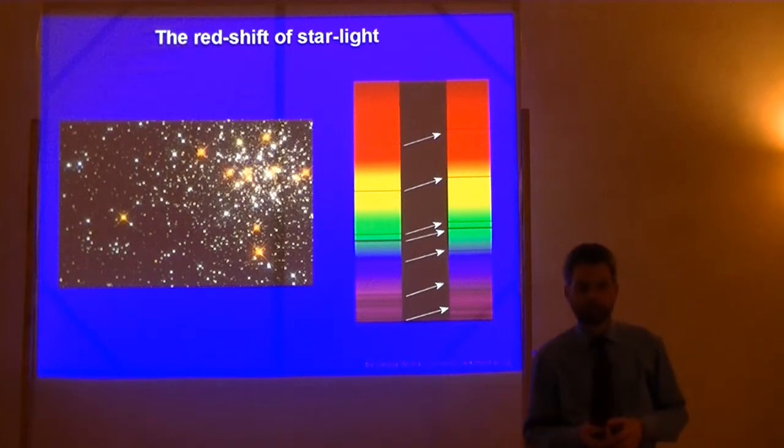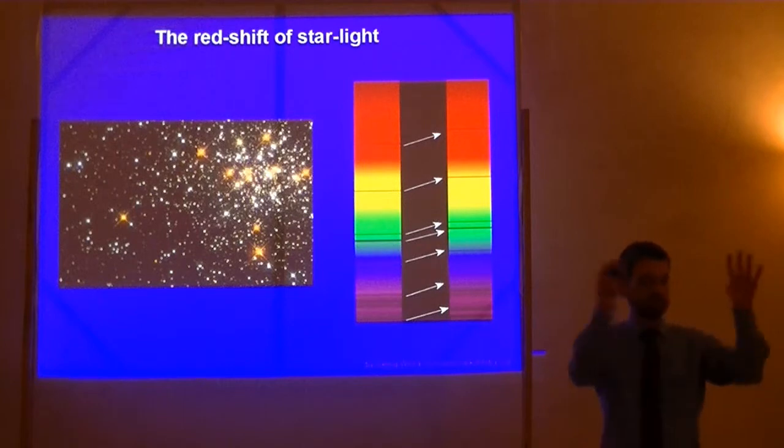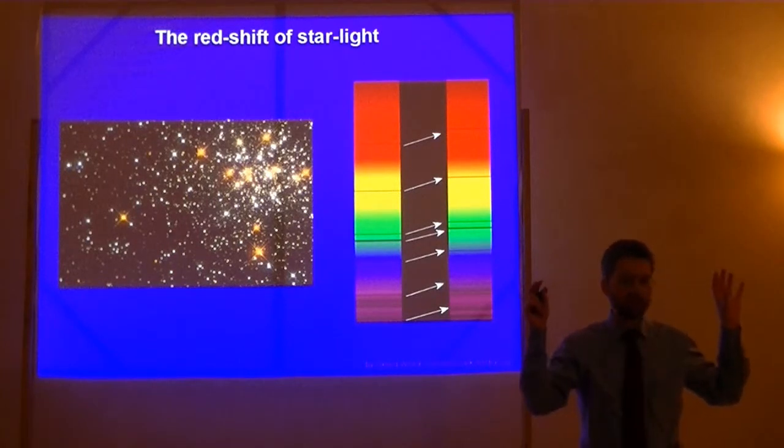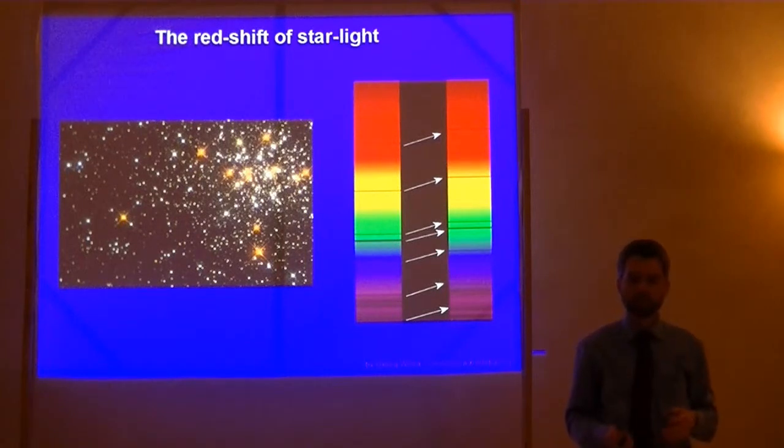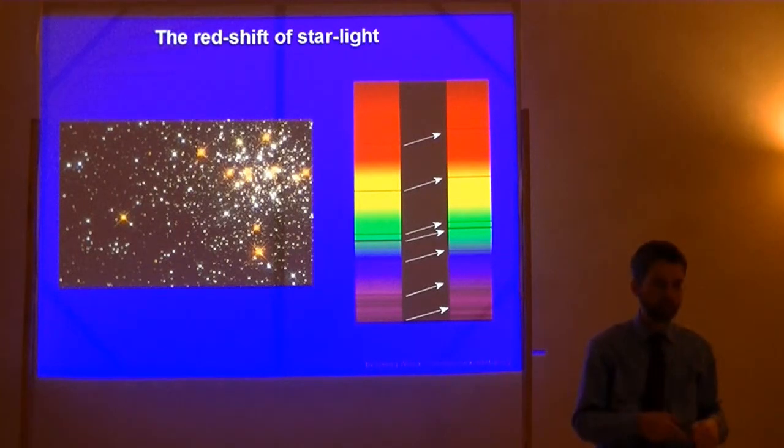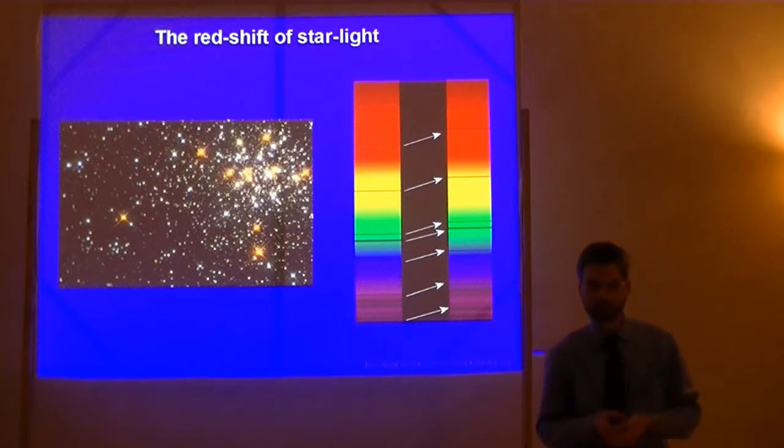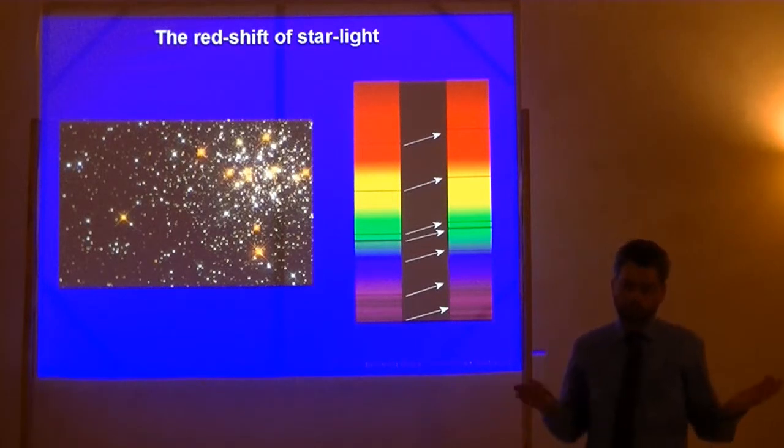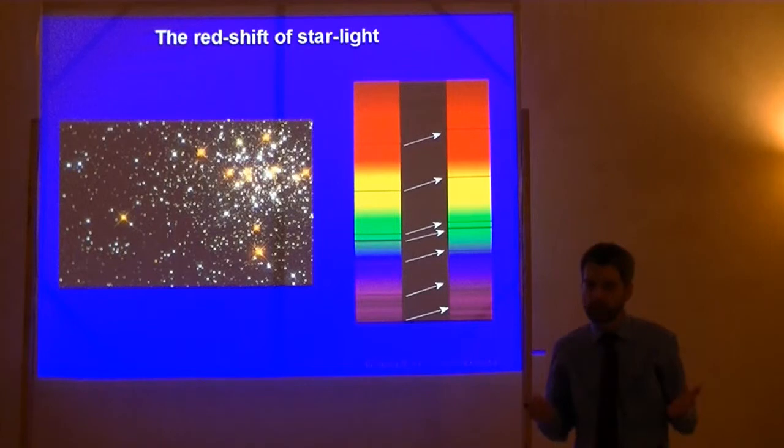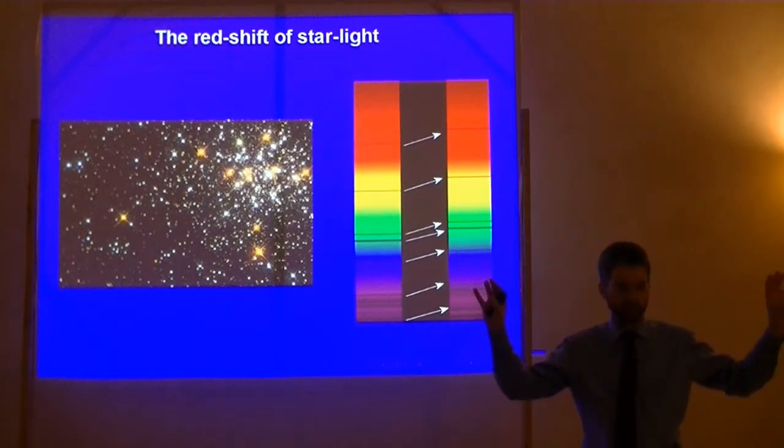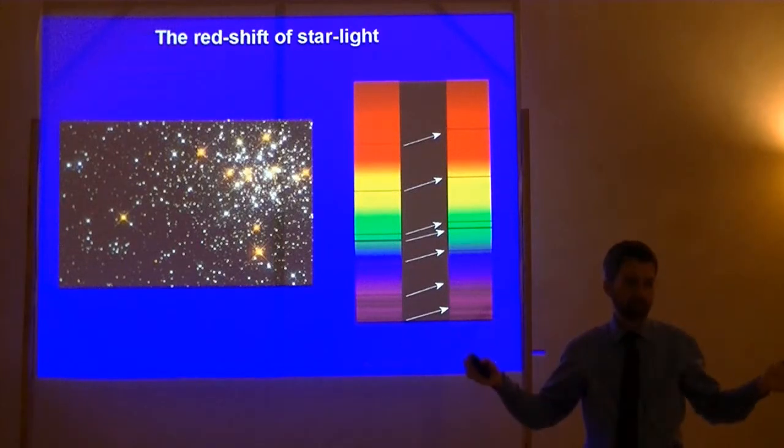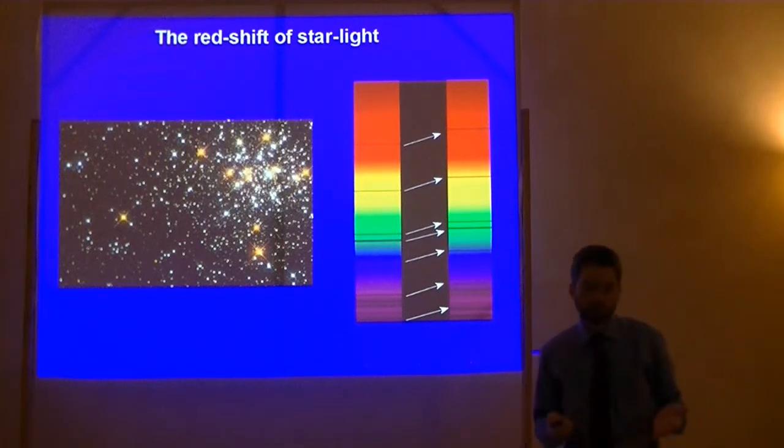And you apply this to the starlight. When this was done, it was found that all the galaxies around us have a distribution of their frequencies, of their light frequencies, which is shifted towards the red compared to the same kind of light which we see in the laboratory when we analyze their frequencies. And certainly, one hypothesis how to interpret this is that the galaxies are moving away from us, and from each other.